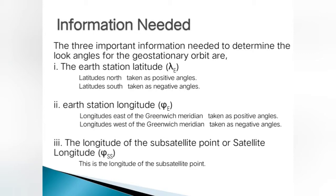For the first parameter, north latitudes should be taken as positive angle and south latitudes should be considered as negative angle. For longitude, east of the Greenwich meridian should be taken as positive angle. The third parameter is the longitude of the subsatellite point. These three parameters are very important to determine the look angles for geostationary orbit.